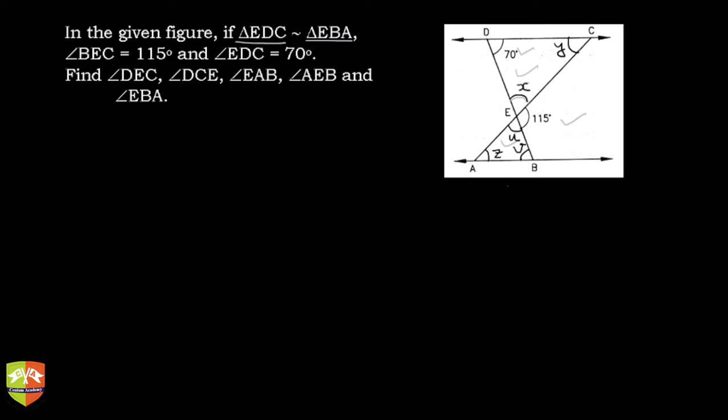Now let's prove and find these angles. There are a few things which are clearly understood - X is equal to U because of vertically opposite angles. But let's start with the given information.